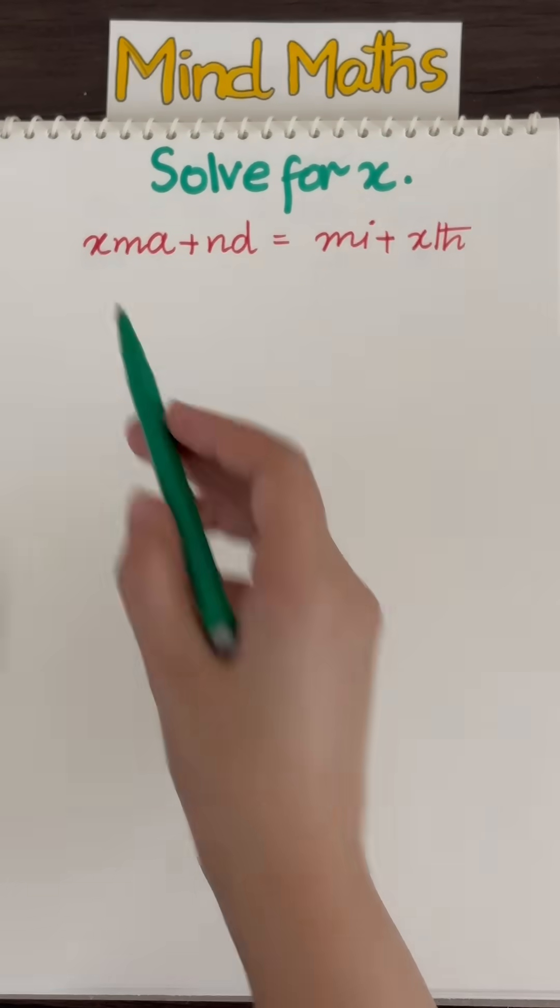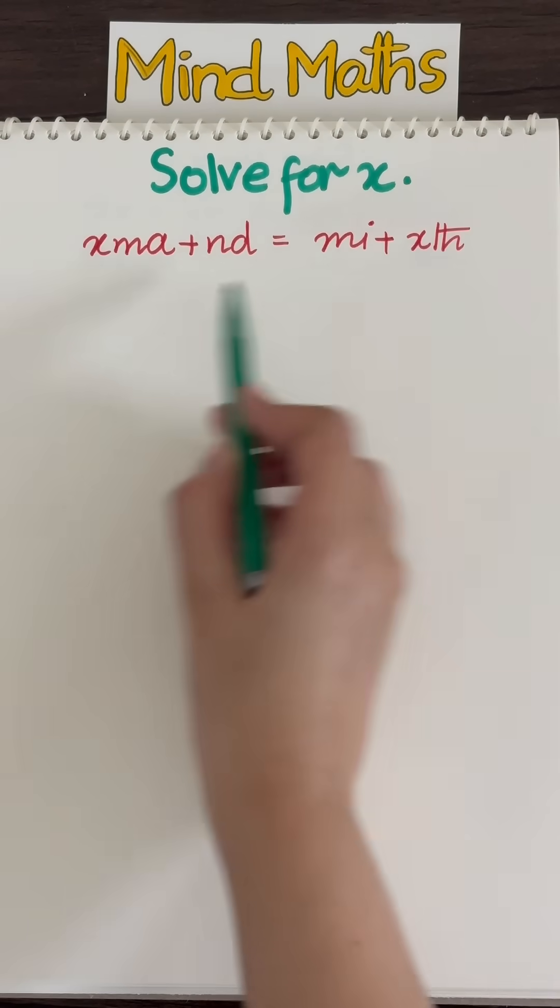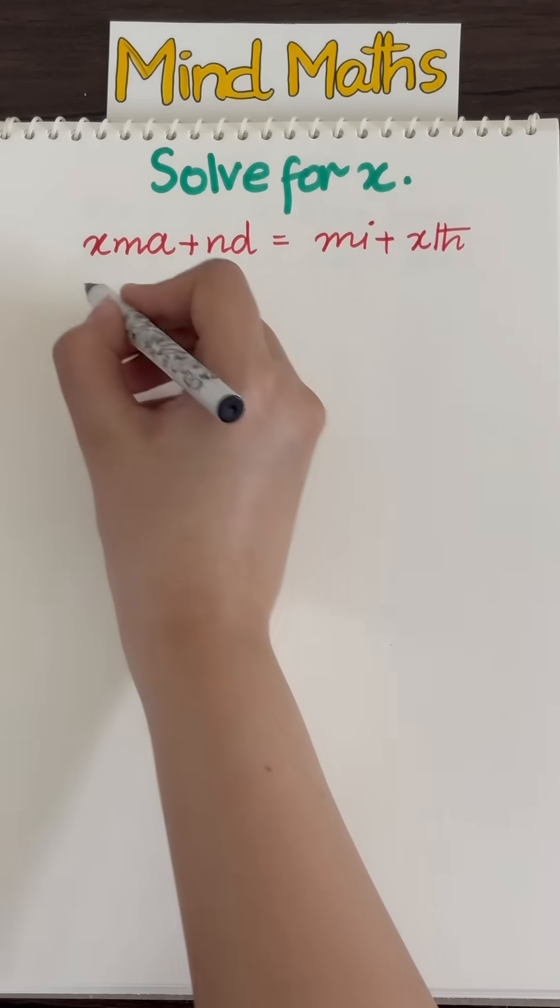1. We want to solve for X, and there's an X on both sides of the equation. We've got to get both X's to the same side of the equation.